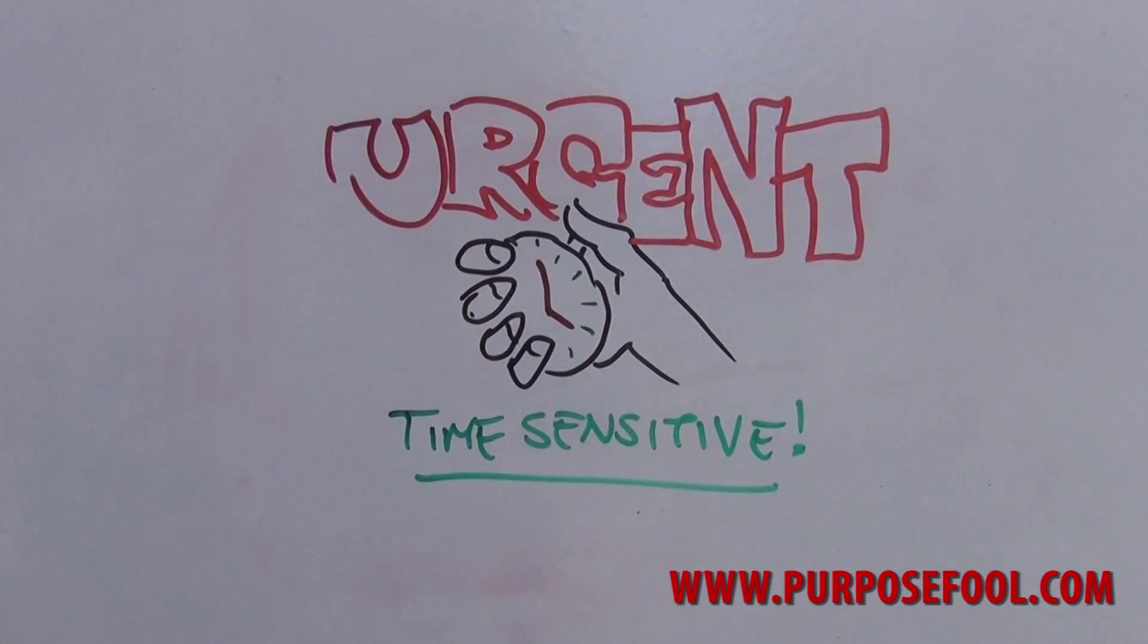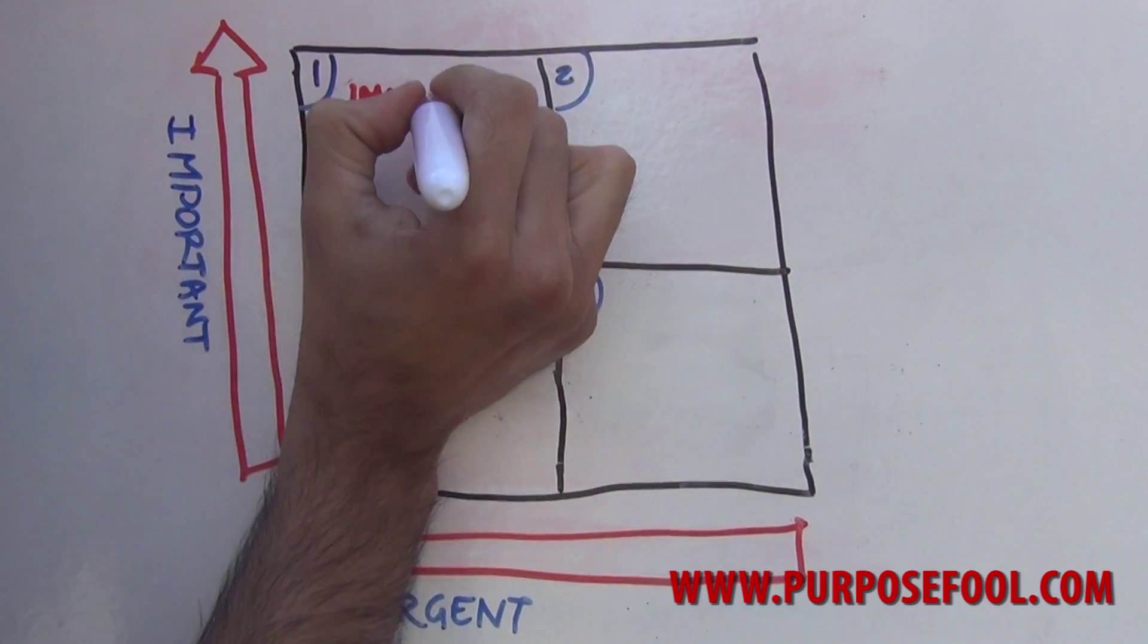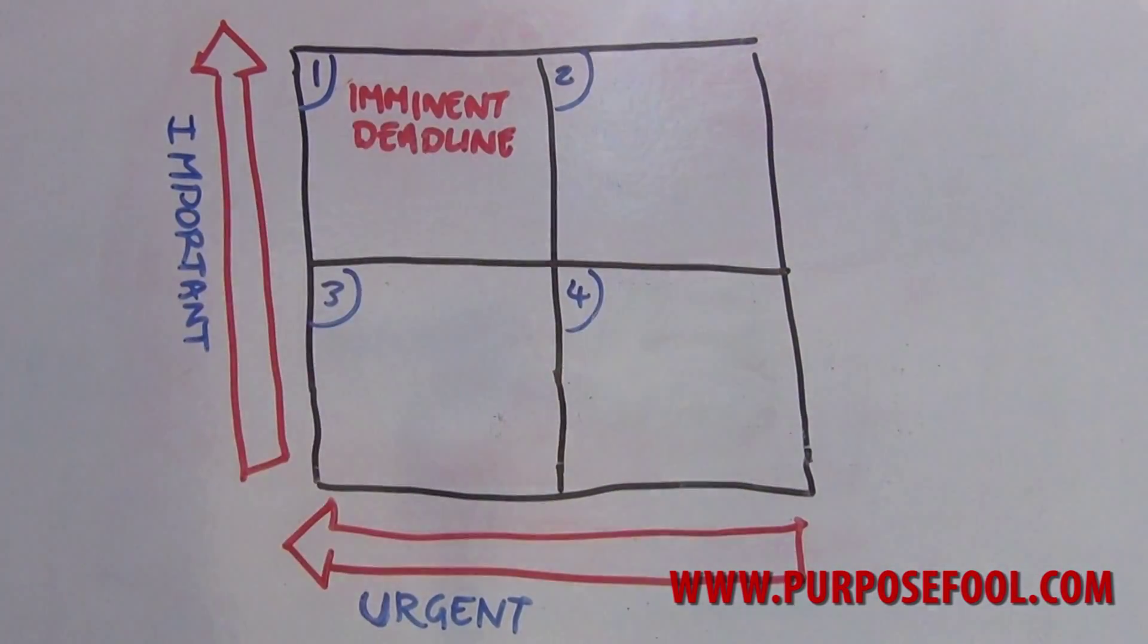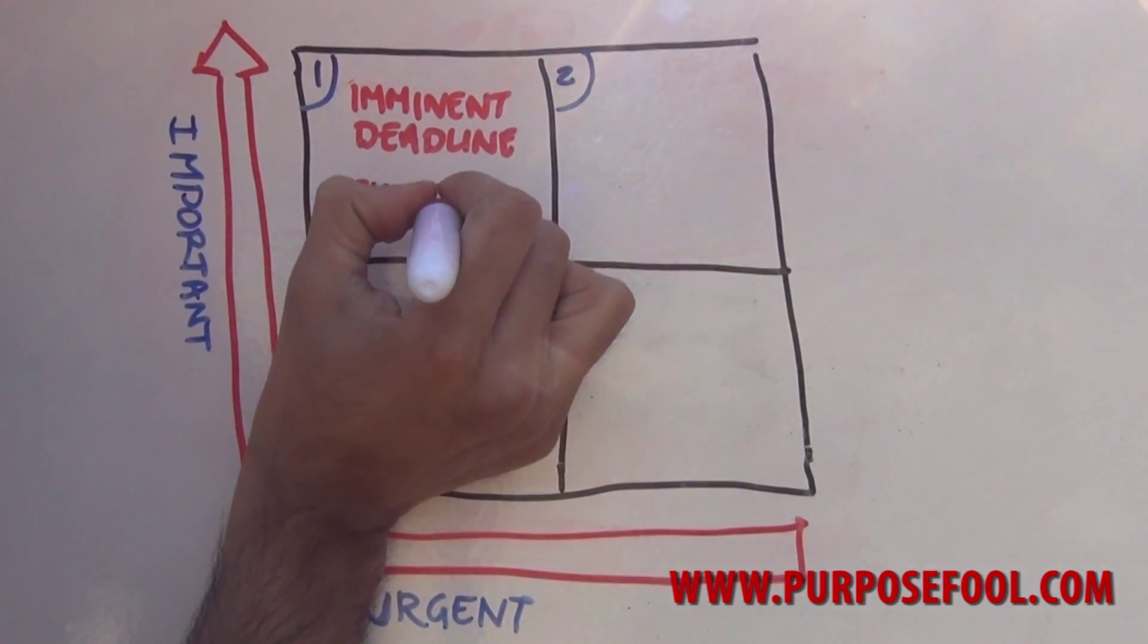So let's look at some examples. Something important and urgent might be an imminent deadline. It might be an exam tomorrow. It might be a crying baby. Something that won't wait.